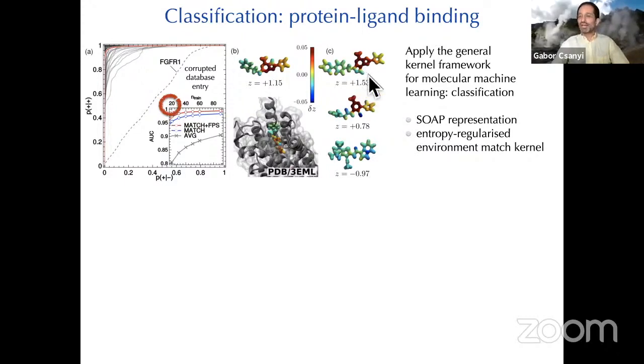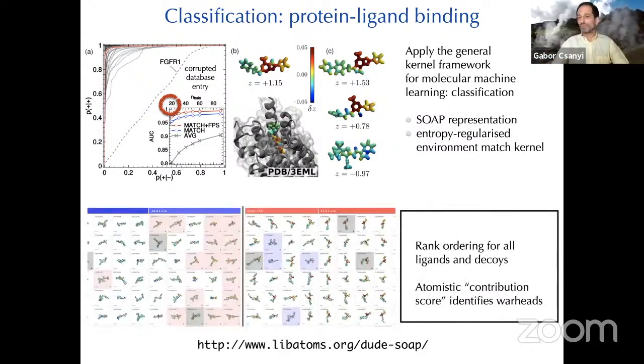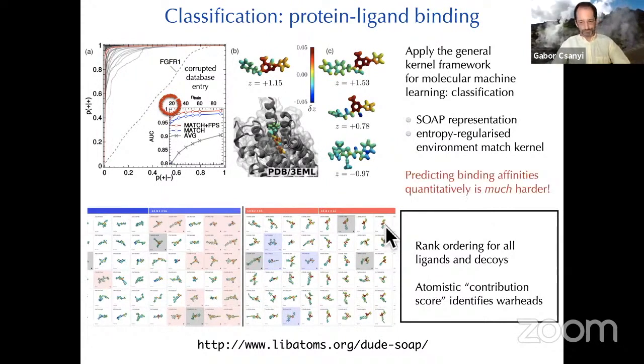Moreover, we can even color which atom contributes to the binding because we have a kernel that's based on atomic environments. We've built this website where you just select which protein you want and it gives you all the binders and non-binders just in order and shows you which atoms contribute to the binding or not. It's classification though, predicting binding affinities is much harder.